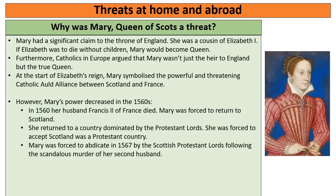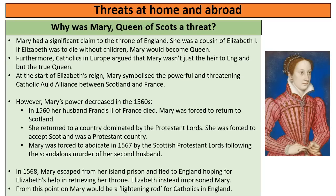Even though Mary's power is decreasing, when she's at her most vulnerable is when she becomes most dangerous for Elizabeth. In 1568, Mary, who had been imprisoned by the Scottish lords, escapes from her island prison and flees to England asking Elizabeth for help — expecting Elizabeth to help as her cousin and fellow monarch. Elizabeth instead imprisons Mary because she can't execute her straight away; she doesn't want to execute another monarch, believing monarchs are appointed by God. But equally she doesn't want to help Mary back to Scotland, and she can't let Mary stay free because English Catholics in the north — where Mary arrived — believe Mary should be Queen of England. From this point on, even imprisoned, Mary becomes a lightning rod for Catholics in England and plots and revolts start to develop around her.